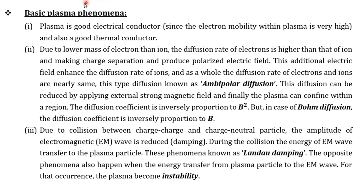Some basic plasma phenomena: First, plasma is a good electrical conductor because of the large number of free electrons from ionization. It is also a good thermal conductor. Second, due to the lower mass of electrons compared to ions, electrons have a higher diffusion rate, which can produce polarization of the electric field.